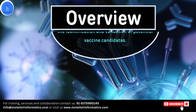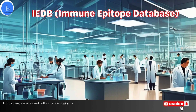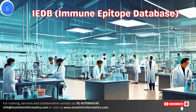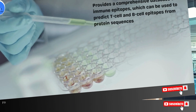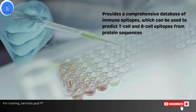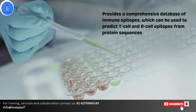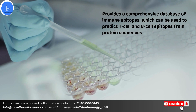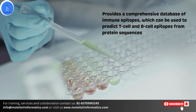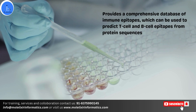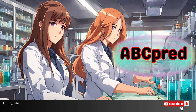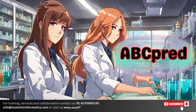Number one is IEDB, i.e. Immune Epitope Database. This is a comprehensive database of immune epitopes which can be utilized to predict T cell and B cell epitopes from protein sequences. Scientists can use the experimental data on known epitopes to guide the vaccine design.